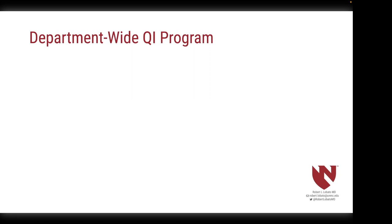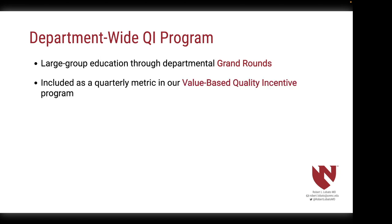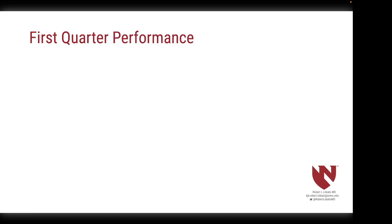Next, we implemented a department-wide QI program. We started with large group education through departmental grand rounds, where we reviewed the current guidelines on the prevention and treatment of post-op nausea and vomiting. We also chose to include our MIPS 430 performance in our value-based quality incentive program — an enterprise-wide effort to give a small reward to the department in exchange for meeting or exceeding pre-specified quality goals. Our first quarter performance, three months later, looked like this.